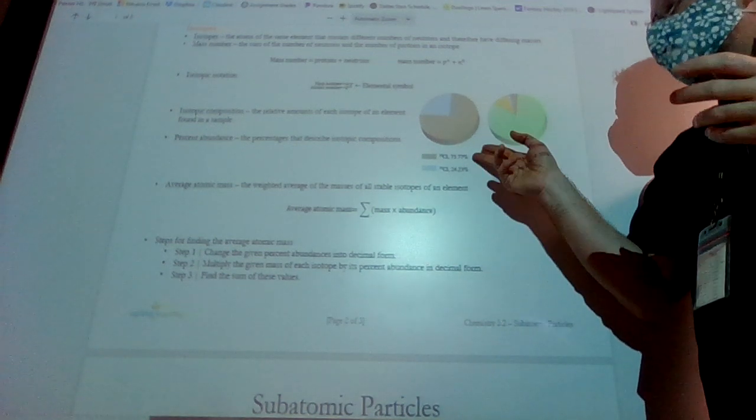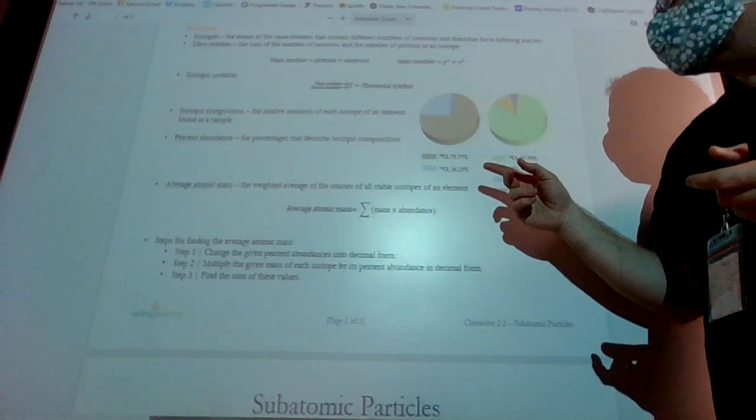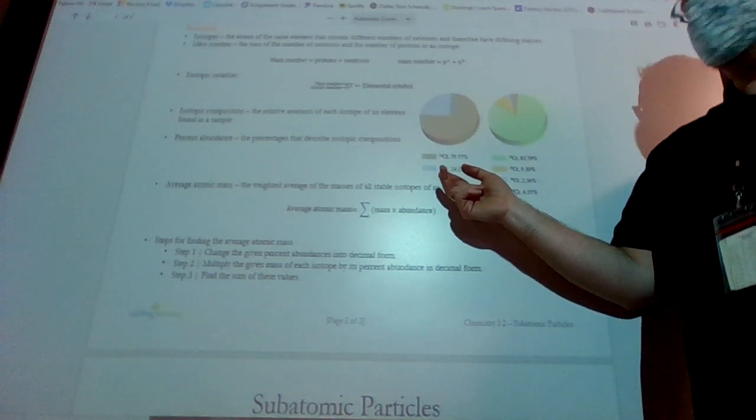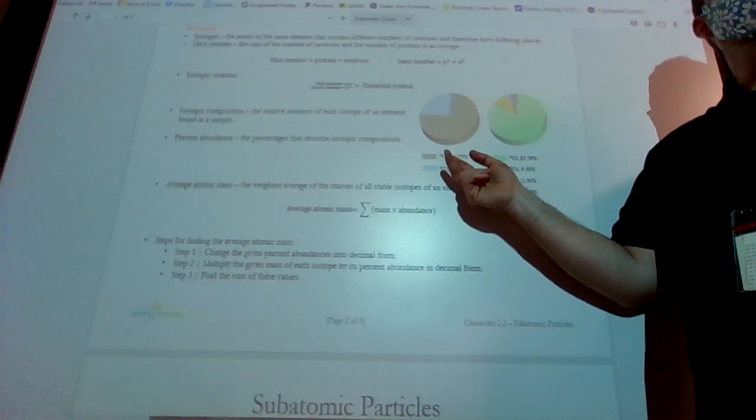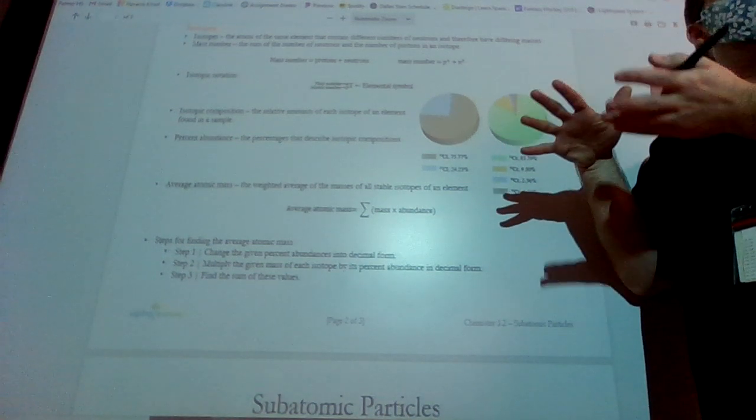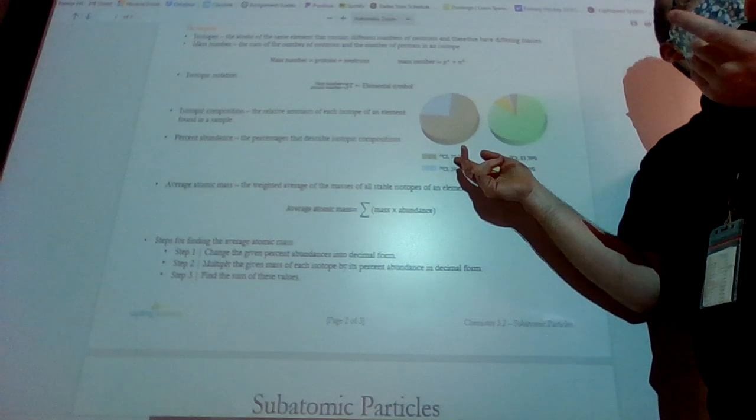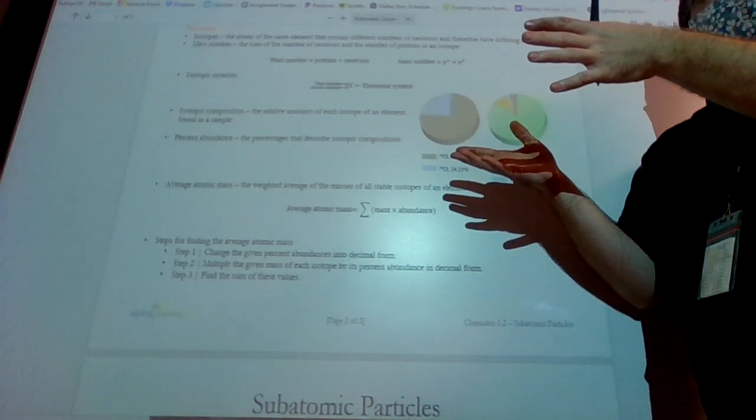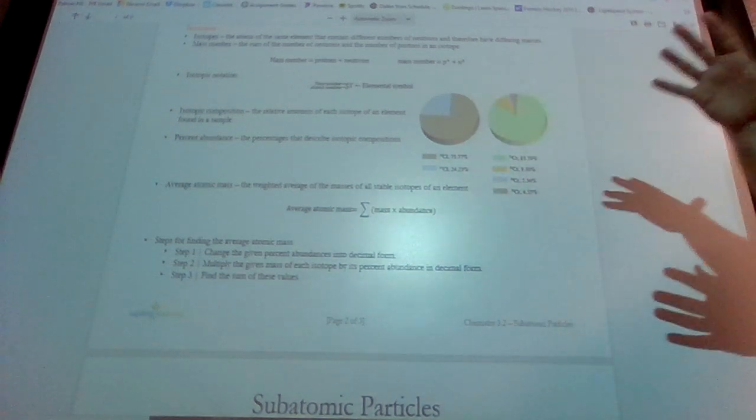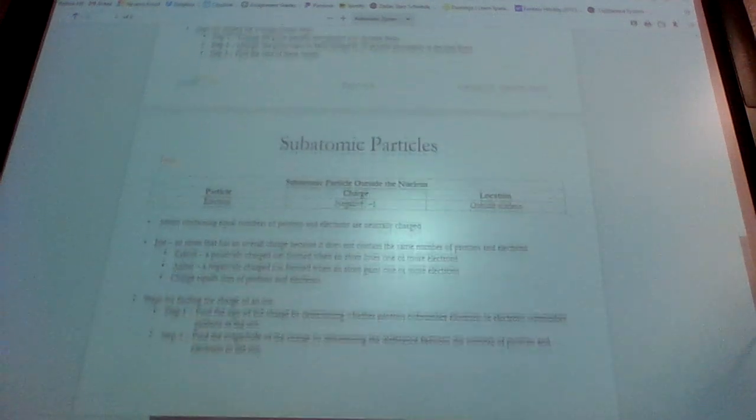And remember, your average is going to be somewhere in between the two numbers that they give you. Let's say this is chlorine 35 and chlorine 37. If I take an average of chlorine 35 and chlorine 37, it's going to be somewhere in between 35 and 37. I know that. But if I have mostly 35, it's probably going to be closer to 35. If I have mostly 37, it'll be closer to 37. But it's got to be somewhere in between them. It can't be more or less than that.